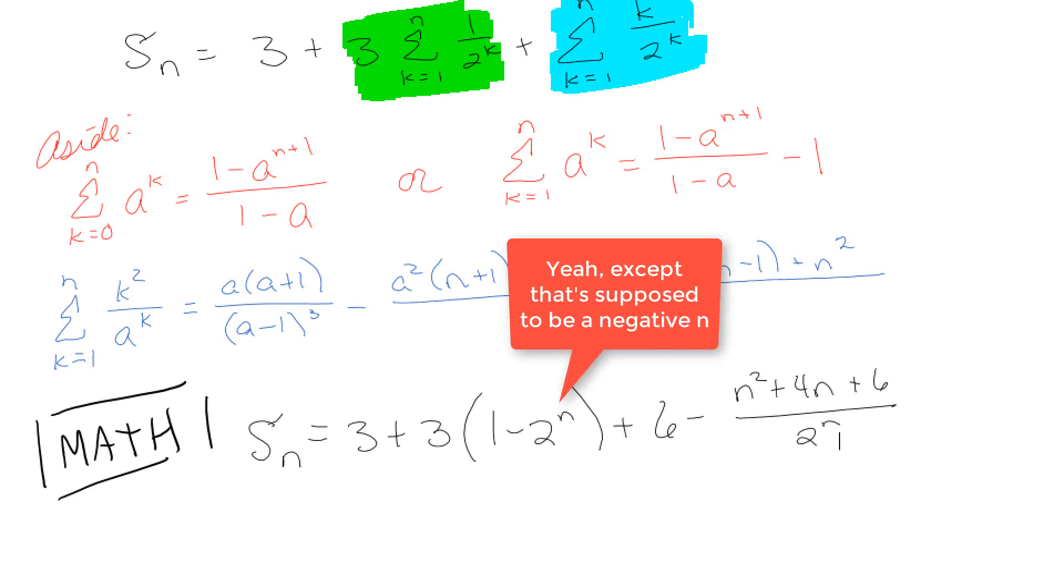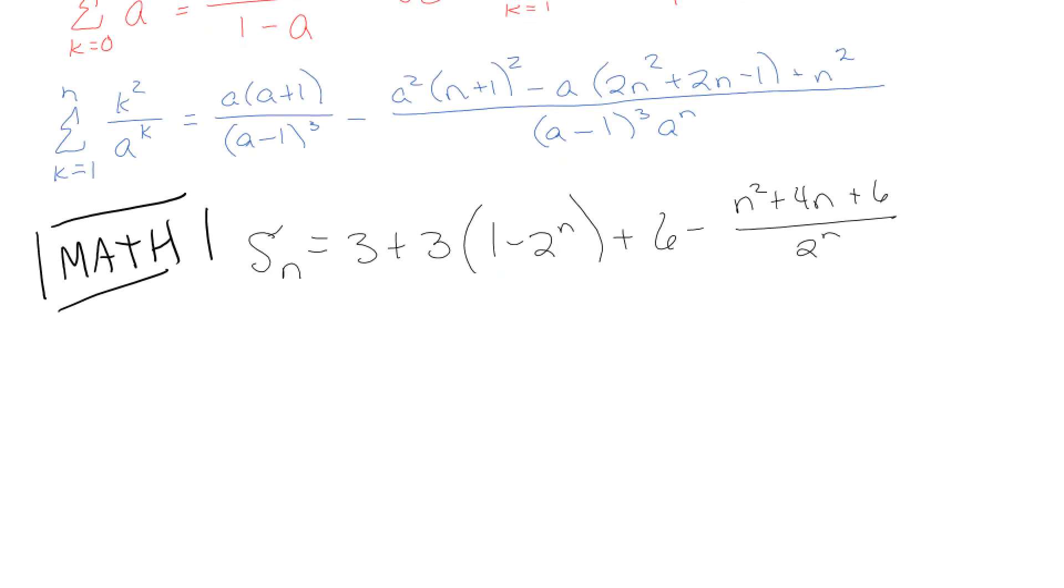And there you go. Look how exciting that was. Now I can obviously do some simplifications here. Simplification: 3 plus 3 is 6, 6 plus 6 is 12. And then all this crazy stuff.